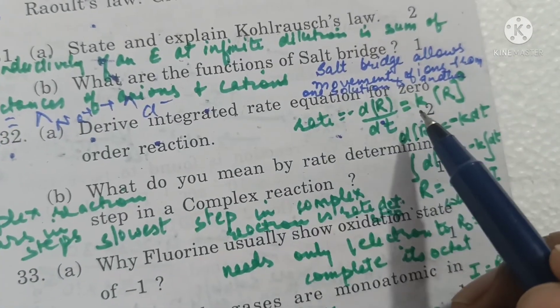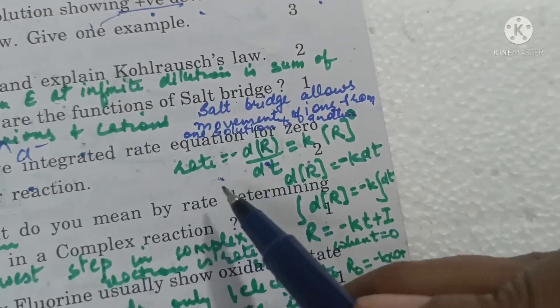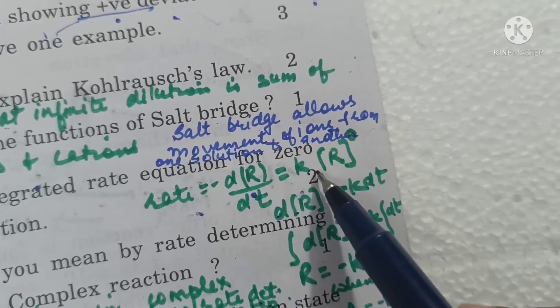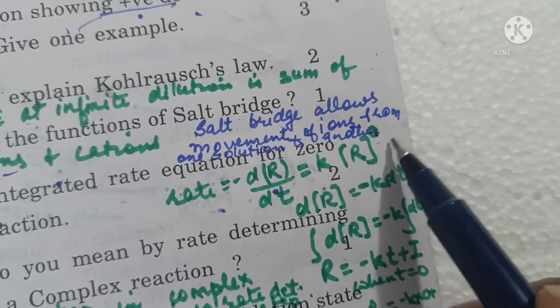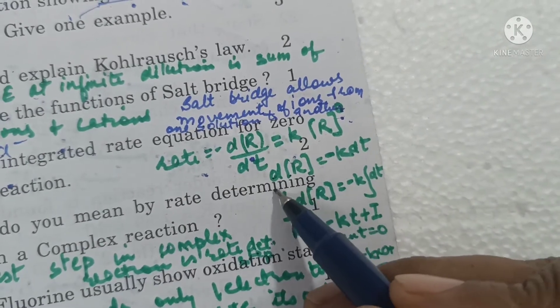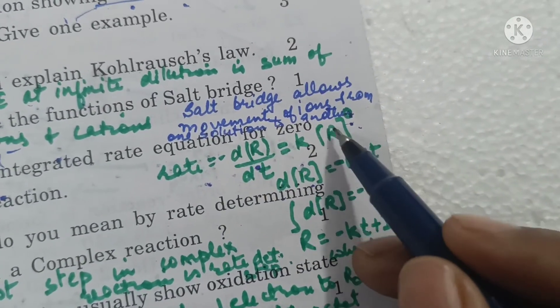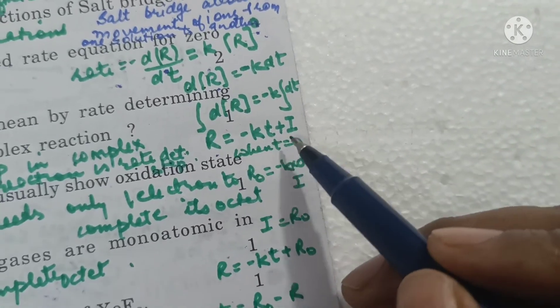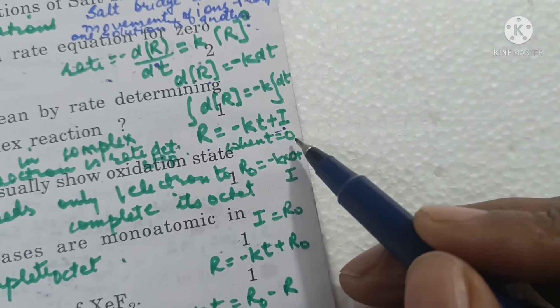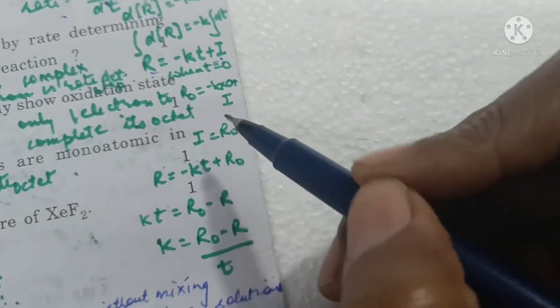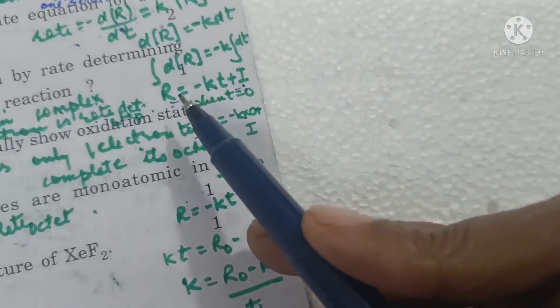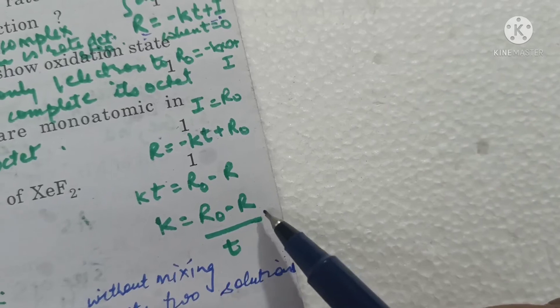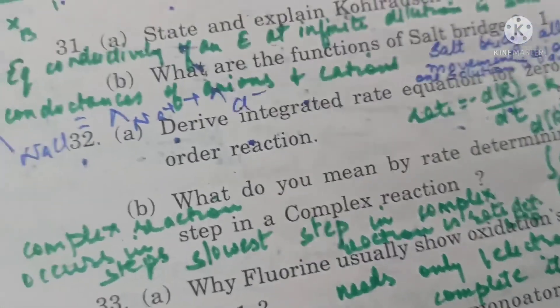Derive integrated rate equation for zero order reaction. For a zero order reaction, rate equals change in concentration of reactant with respect to time equals constant into r raised to power zero because it is zero order. It does not depend on concentrations. When we integrate this, taking dt to this side and r raised to power zero is one, we get r equals minus kt plus i. Finding out the value of i when time equals 0, we get r0 equals i. Putting the value of i in this equation, we get r equals minus kt plus r0, or k equals r0 minus r upon t. This is the integrated rate equation for zero order reaction.